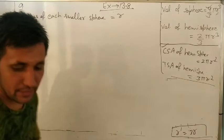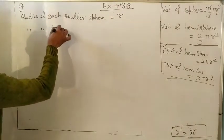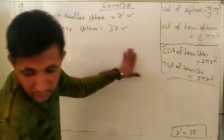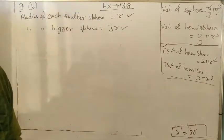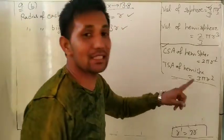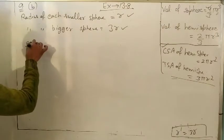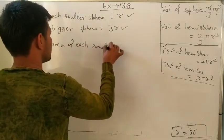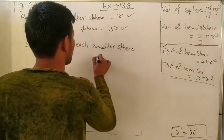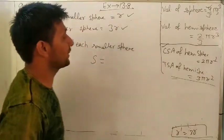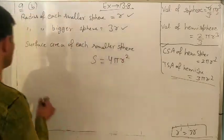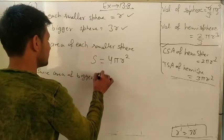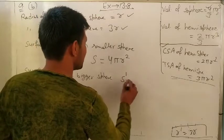In the second part, we find the ratio of S to S'. The radius of the bigger sphere is 3r. Surface area of each smaller sphere: S = 4πr². Surface area of bigger sphere: S' = 4π(3r)².